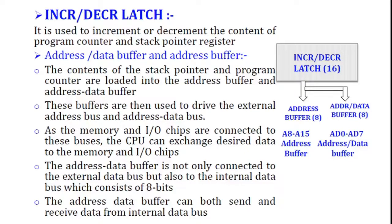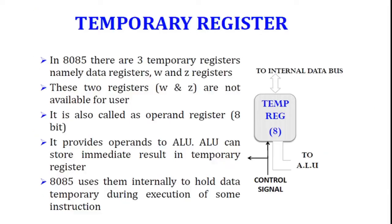AD0 to AD7 is the multiplexed address data bus. Next is the temporary register. In the 8085 there are 6 general purpose registers (B through L), along with the accumulator. Users can access the accumulator and the 6 general purpose registers, but cannot access the temporary registers, because they are used only for internal operations. For example, during 16-bit addition or subtraction, the temporary registers come into play. The W and Z temporary registers are not accessible by the user — they are used internally by the 8085 to temporarily store data.